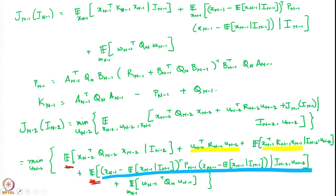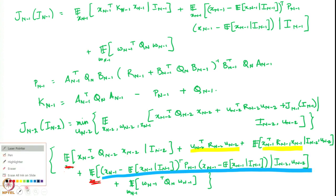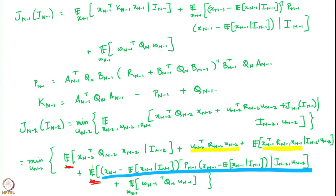As a result of this we can now revisit the dynamic programming equation we had written out at time step n minus 2. We had observed that this green term here is independent of u_{n-2}, it does not depend on u_{n-2}. The yellow terms did depend on u_{n-2}, and the last green term is also independent of u_{n-2}.